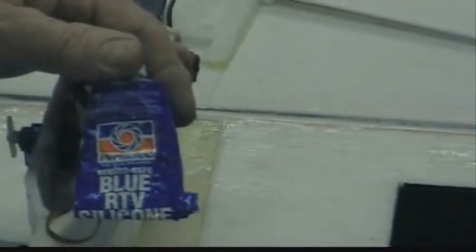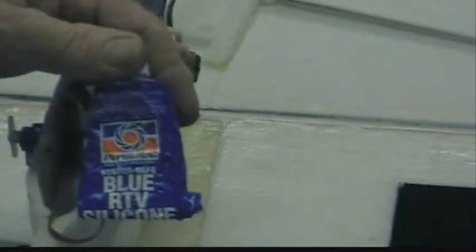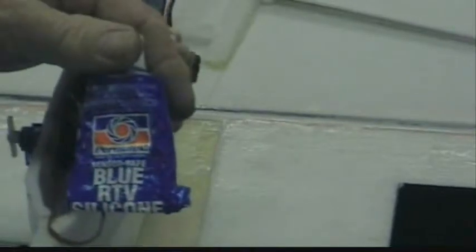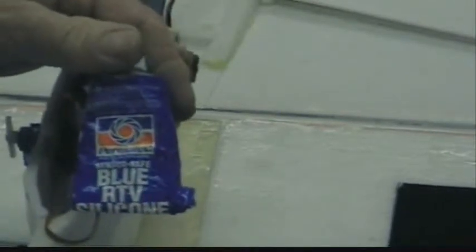RTV is an air curing silicone. They use it for gaskets. It's also a pretty good adhesive. For our purposes, it'll be an adhesive and waterproofing. It makes a gasket to keep the water out.